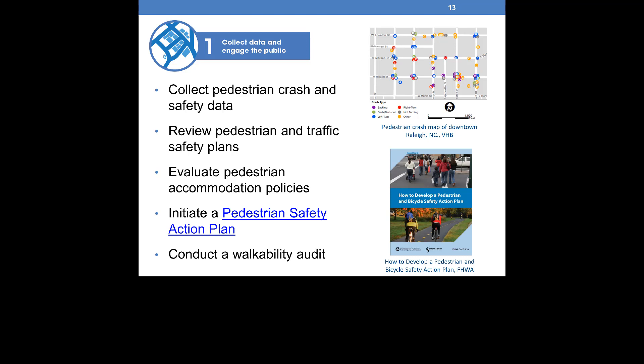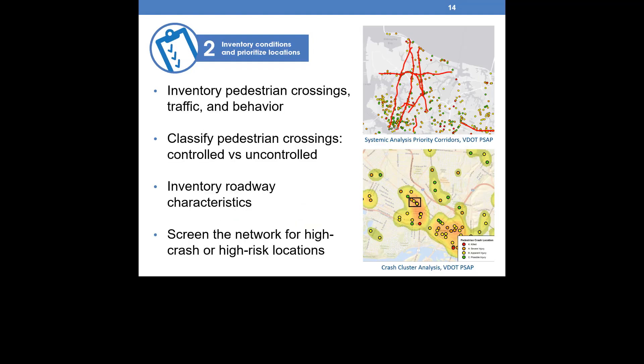If a less formal process is preferred, you can document public comments about safety concerns or conduct a walkability audit to identify locations generally considered as less safe for crossing pedestrians. In Step 2, inventory conditions and prioritize locations, you would document field conditions to prioritize crossing locations. Pedestrian crossings should be inventoried and classified as either uncontrolled or controlled locations. Documenting pedestrian volumes and road user behavior at the crossings provides valuable information for countermeasure selection. Roadway characteristics near the crossings should be inventoried as well, and it is best practice to digitize this information, including traffic controls and conditions.